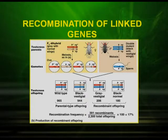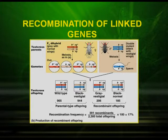Let us study from the following picture how the recombination of linked genes was studied by Morgan. He crossed a dihybrid grey-bodied, normal-winged female with a recessive double mutant male — black-bodied with vestigial wings. The gamete formation produced four types of gametes from the dihybrid female, and you can easily see the recombinants, meaning crossing over has taken place.